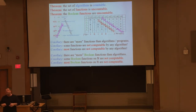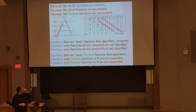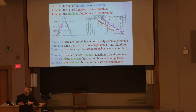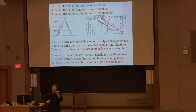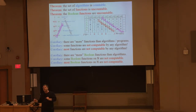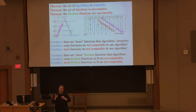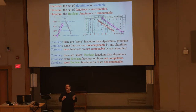An uncountable number of boolean functions will be uncomputable — that's what this is saying. Functions are a mathematical mapping from a domain to a range; an algorithm is a string — a piece of code. A student asks whether a function is the same as an algorithm, and I want to split that hair by saying they're not the same, simply because they're different types.